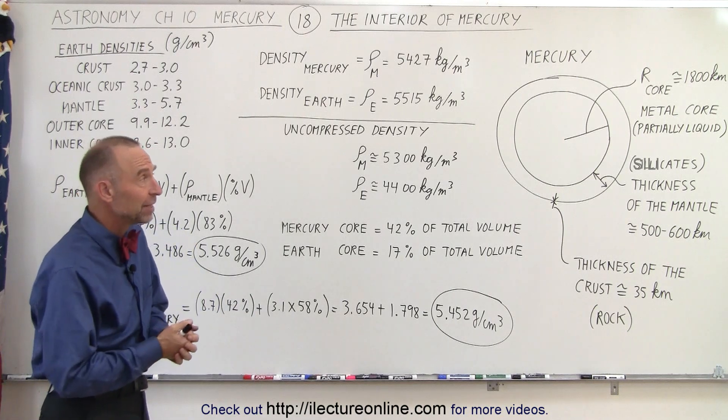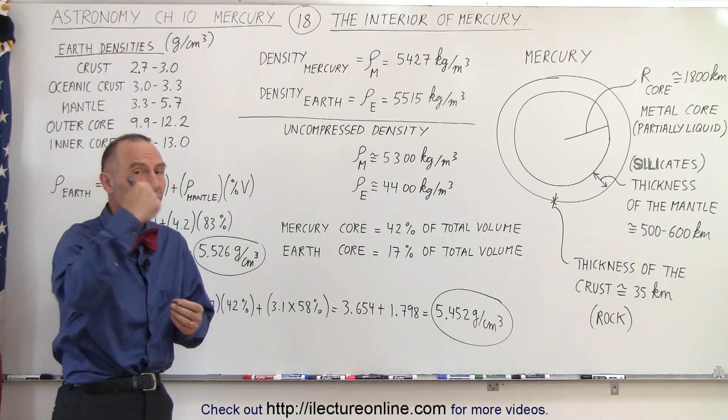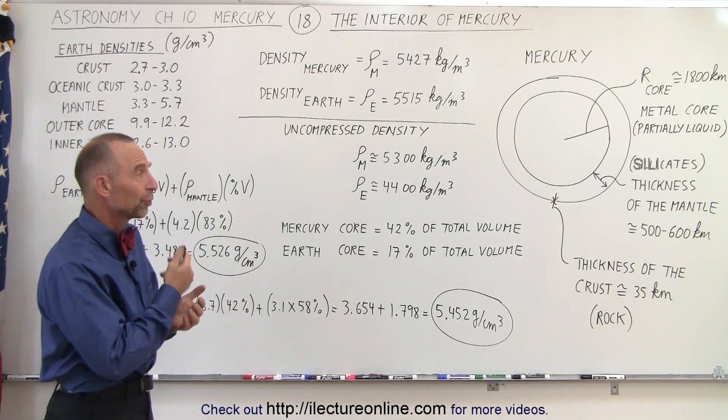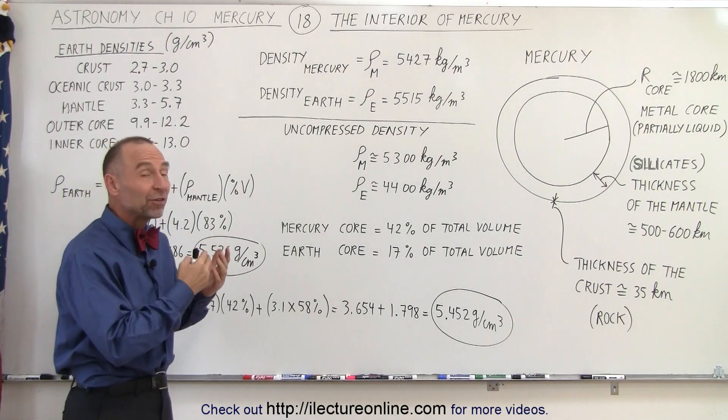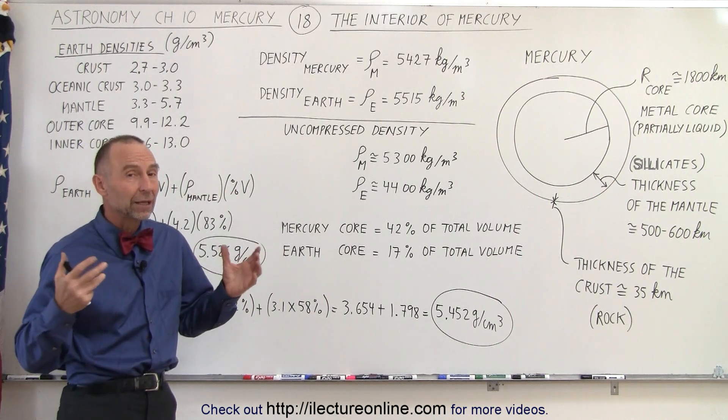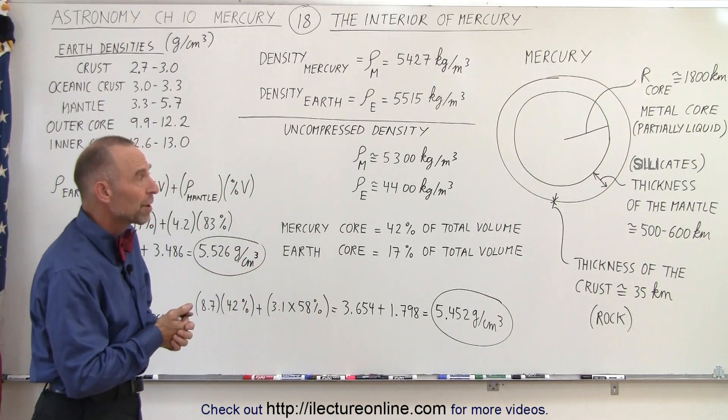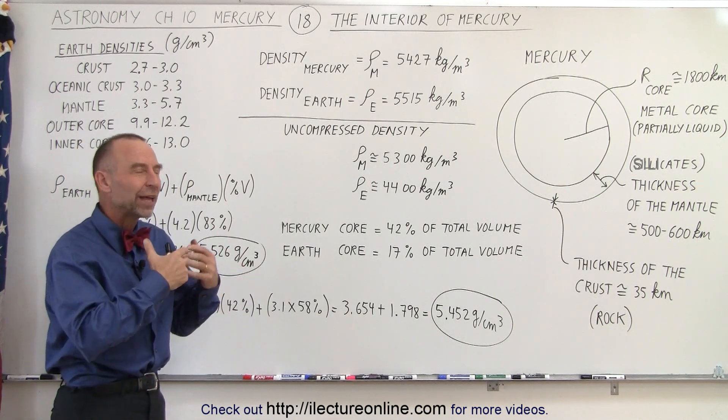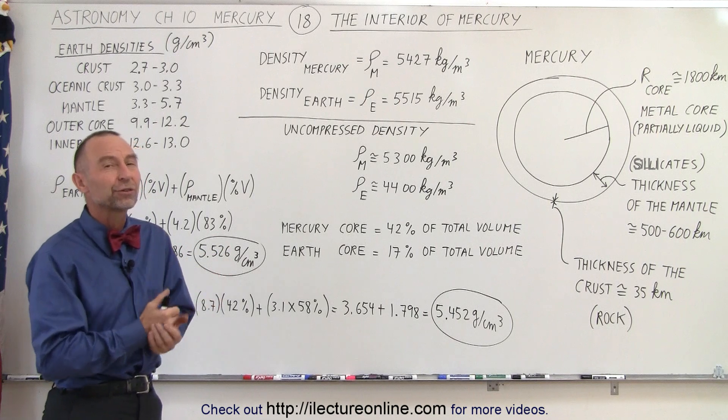The first one was in the 1970s, Mariner 10, which only flew by the planet twice before it stopped functioning. And of course we still have the spacecraft Messenger, which managed to go into orbit around Mercury for a while, from which we got quite a few measurements. But nevertheless, we didn't land on the planet, so we don't have a good feel for the interior.